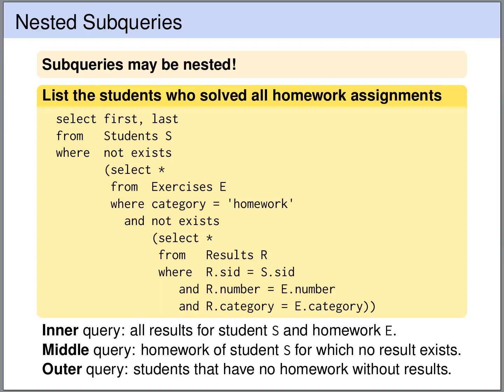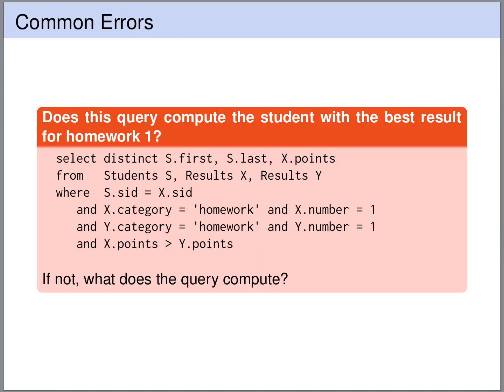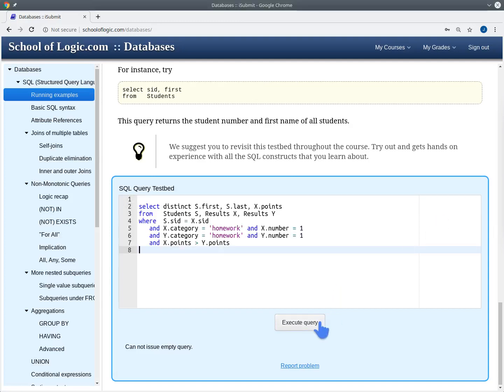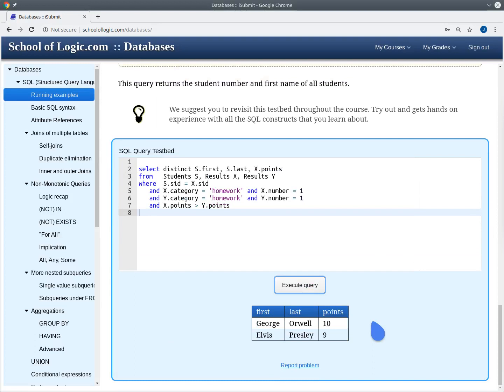On the slides we have essentially the same solution we just derived. Now let's look at another query on the slides: does it compute the students with the best result for homework 1? Running it gives us George Orwell and Elvis Presley — George Orwell has 10 points, Elvis Presley has 9 points — so clearly it does not compute the student with the best result.